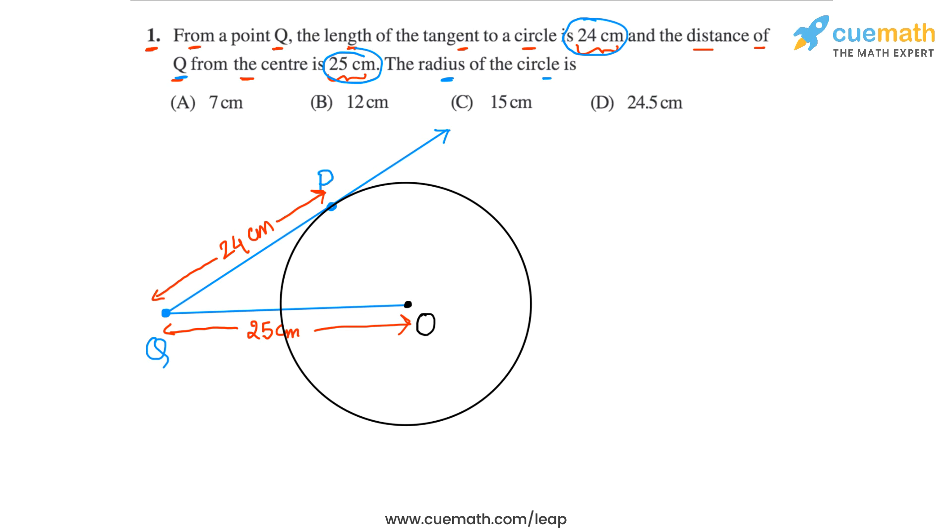So we have to now find the radius of the circle. The radius, if we join OP, OP will be the radius of the circle. So we have to find the length of OP. And you can see that this is a very easy question because what we are getting in this figure is a right angled triangle.